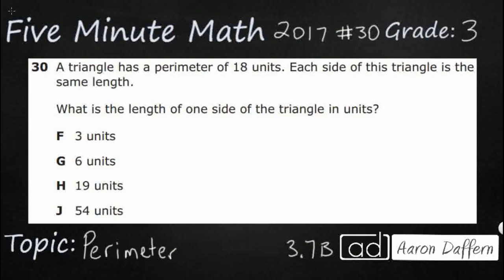So we are supposed to try to find the perimeter, or we actually have the perimeter, but we don't have any pictures here, so drawing a picture is going to be very helpful. It says a triangle has a perimeter of 18 units, so we already know that the perimeter equals 18. It just says 18 units, which means it doesn't really matter what the units are.